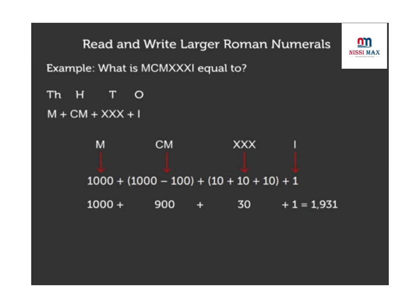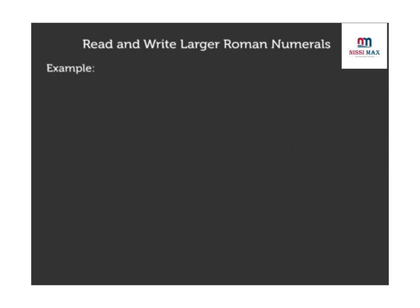Now let us look at another example. Write 3817 in Roman numerals. We first write the number 3817 in expanded notation as 3000 plus 800 plus 10 plus 7.